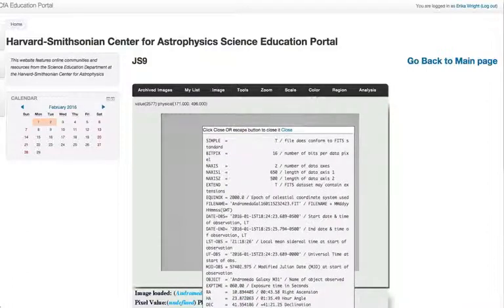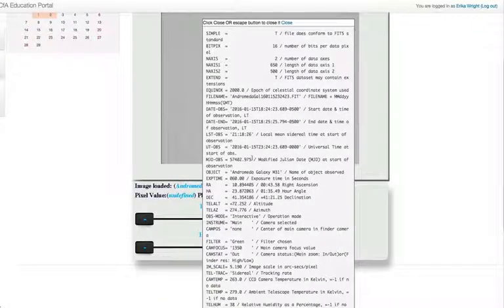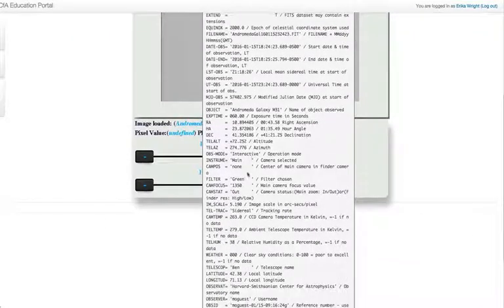And just as we suspected, the number is 0, meaning our telescope was actually capturing an image of clouds. So no matter what we do to process it, we're not going to get anything back.